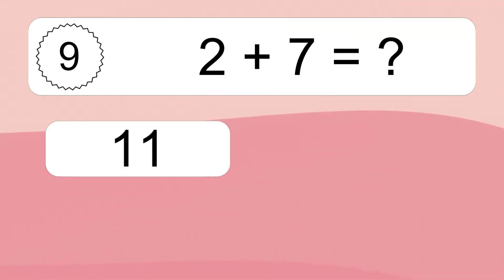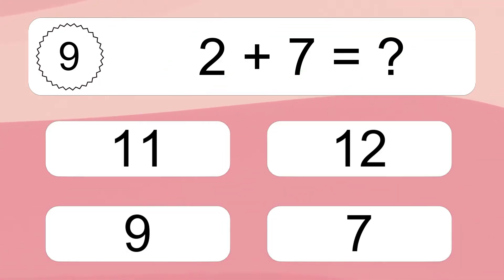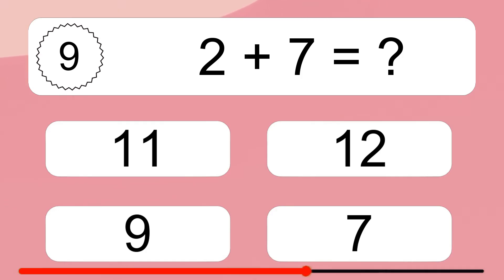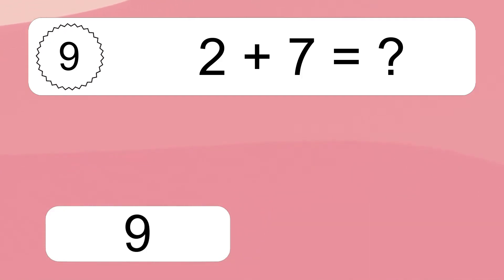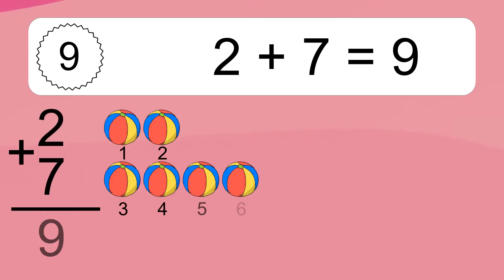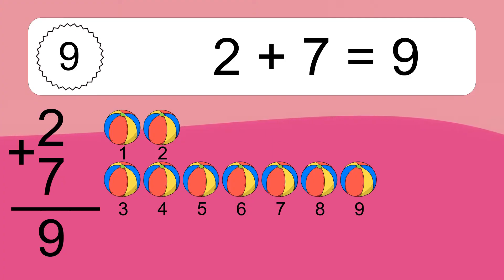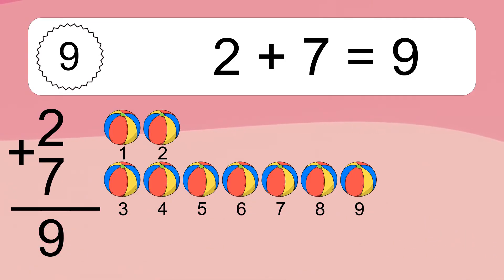Two plus seven equals what? Two plus seven equals nine. Let's count it: one, two, three, four, five, six, seven, eight, nine.